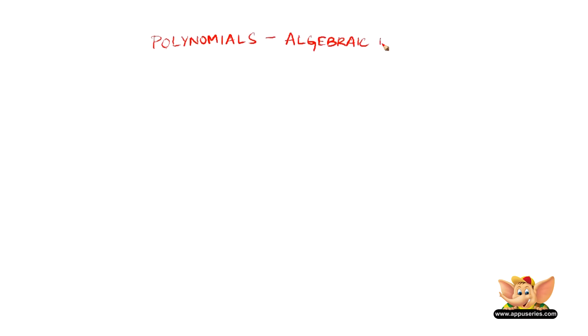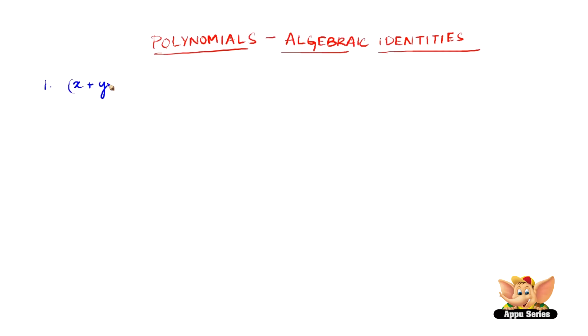Here I am going to show you 8 algebraic identities. Identity 1 is (x + y) whole squared equals x squared plus y squared plus 2xy.